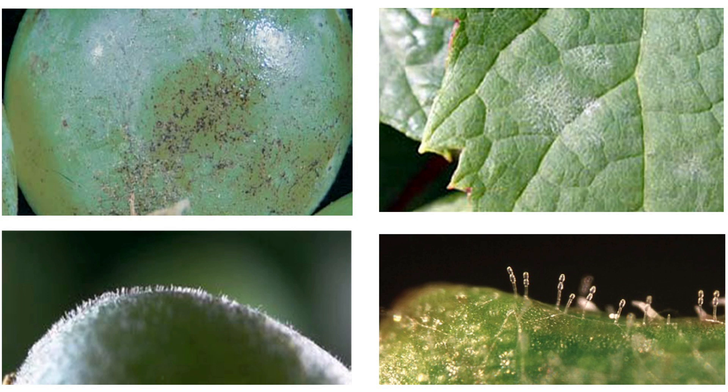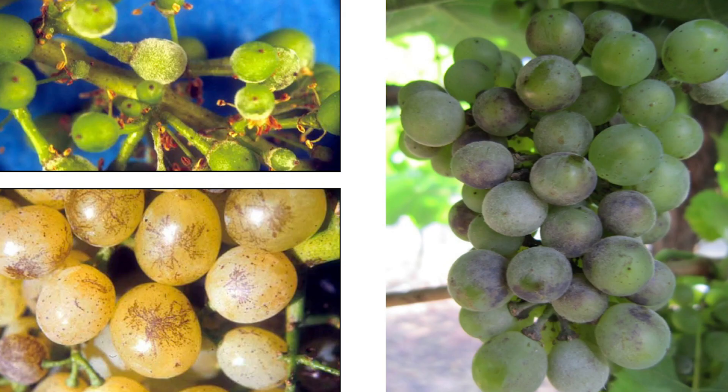Grapevine powdery mildew is a common fungal pathogen in Australian vineyards. In table grapes, disease tolerance is low and crop loss is mostly related to rejection of diseased fruit for markets because of unsuitable appearance and taste. This short video aims to discuss the key elements for effective management of powdery mildew through the use of well-timed and applied fungicide sprays.